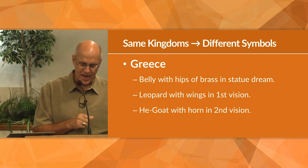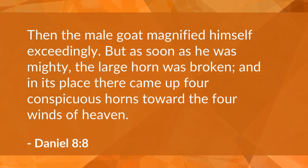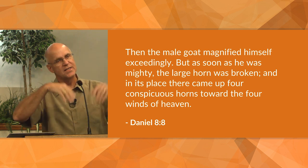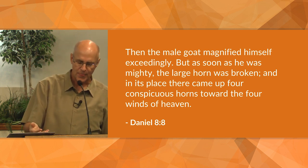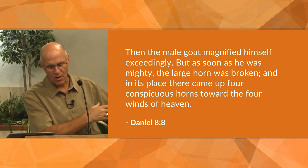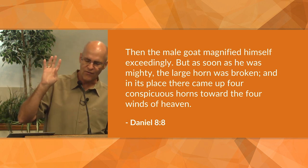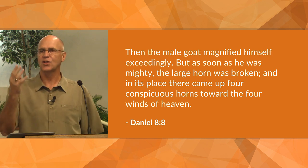Chapter 8, verse 8 says: 'Then the male goat magnified himself exceedingly, but as soon as he was mighty, the large horn was broken, and in its place there came up four conspicuous horns toward the four winds of heaven.' Here Daniel prophesies about what would happen after Alexander's death, as four of his generals divide the kingdom and take control of it.